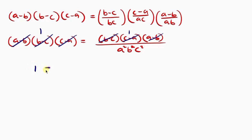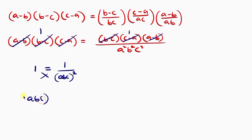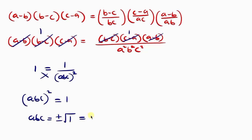So we have 1 equals 1 over (ABC)². Cross-multiplying gives (ABC)² equals 1. To remove the square, we take the square root of both sides, leaving ABC equals plus or minus 1. Since we are interested in the positive result, ABC equals 1, as the question asked us to prove.